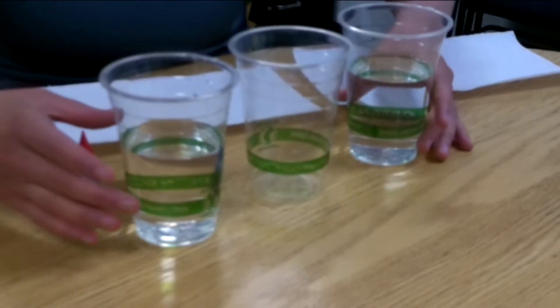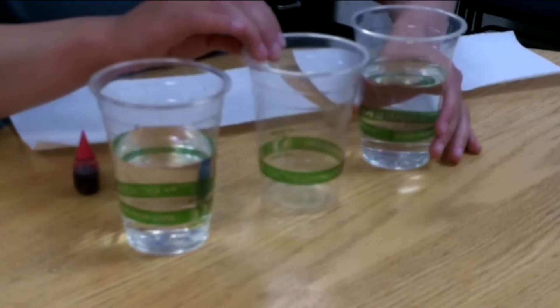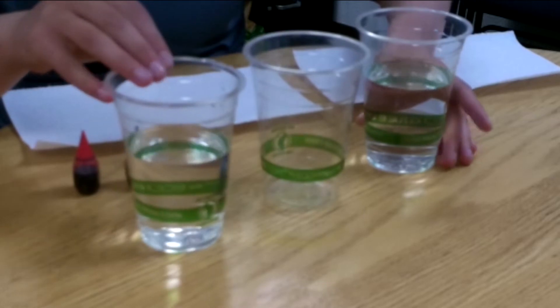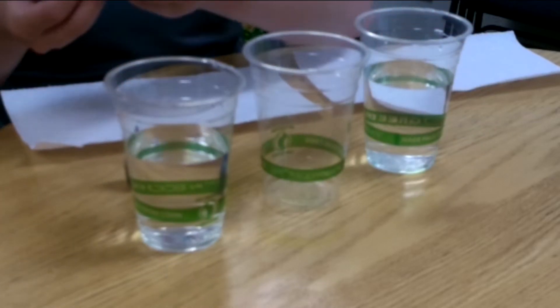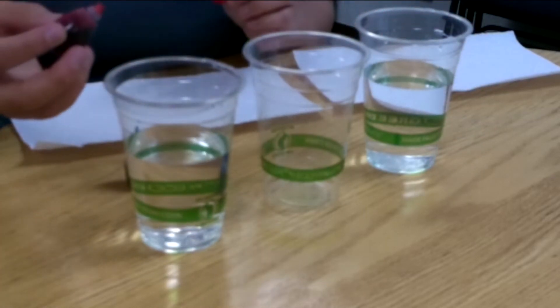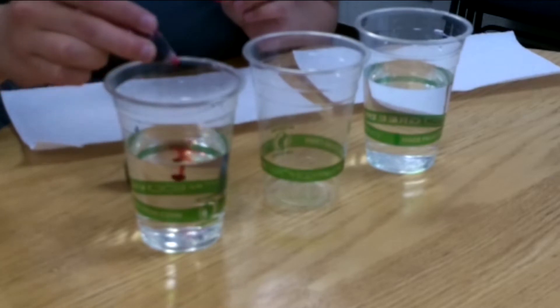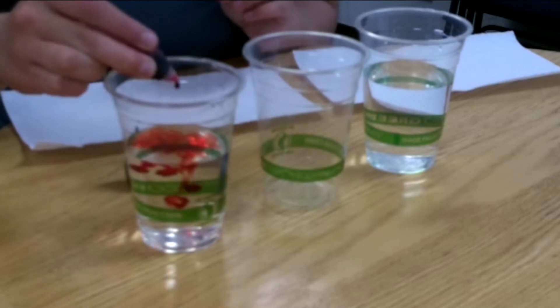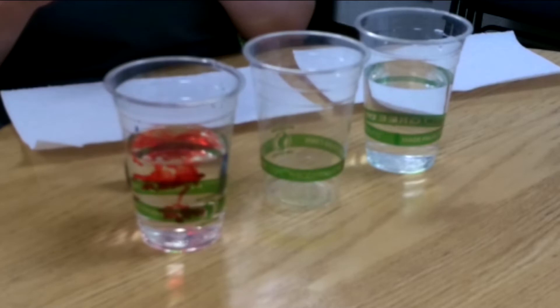Now that we have all our materials ready, we are ready to begin our experiment. Here we have our cups with our water filled up in a line, and what I'm going to do is put a few drops of food coloring in each of these to mix in.